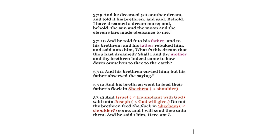'And he told it to his father and his brethren, and his father rebuked him and said, What is this dream? Shall I and thy mother and thy brethren indeed come to bow down to thee to the earth?' This is telltale about the dream — they're telling you what the dream means within the next scripture. 'And his brethren envied him, but his father observed the saying. And his brethren went to feed their father's flock.' The brothers are the ones you have to have before you can get to Joseph — they tend to everything in order to achieve Joseph.